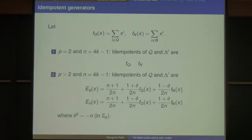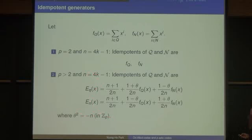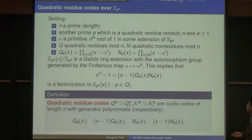You can find formulas for idempotent generators, where theta is a square root of minus N in Z_p-infinity, when N equals 4k minus 1. N can be 4k plus 1 or 4k minus 1, but because of self-duality I only consider the latter case. We can do a similar construction for quadratic residue codes over Z/p^e.